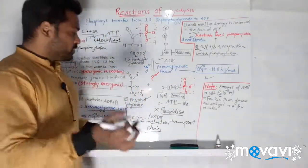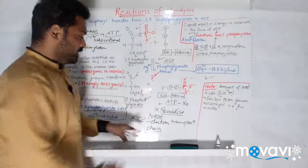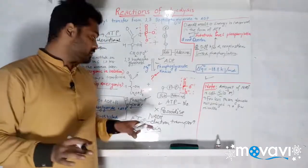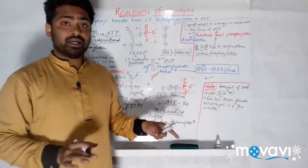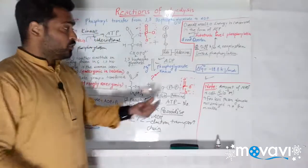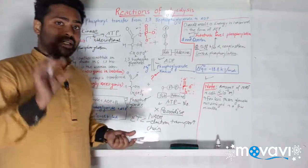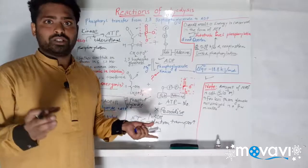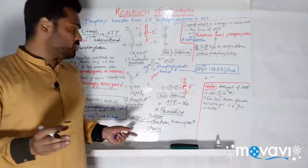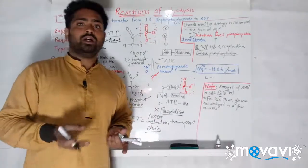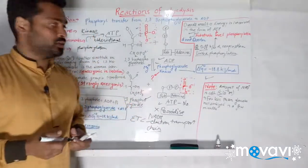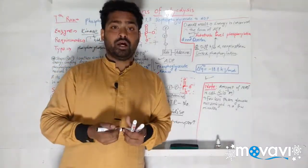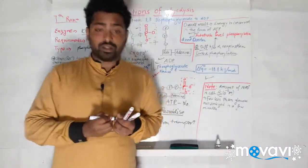Through the electron transport chain, NADH donates its electrons and becomes NAD⁺ again. We are not going into the details of ETC right now, but remember: to convert NADH back into NAD⁺, we regenerate it through the transfer of electrons into the electron transport chain. I hope this helps — thank you.